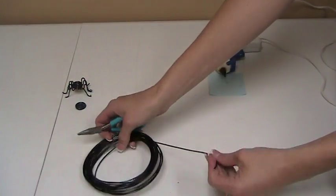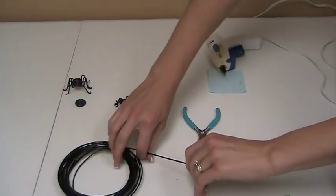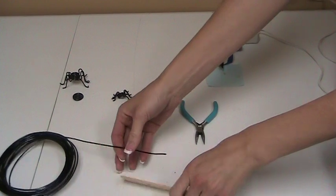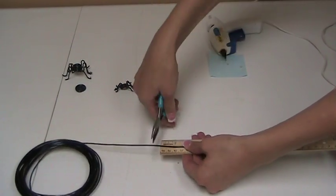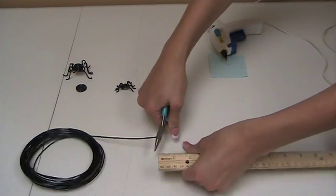Then you're going to need eight strips for the legs. For the large spider, it's going to be two inches per leg. For the small spider, it's actually only going to be one inch.